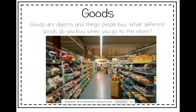Goods are objects and things people buy. What different goods do you buy when you go to the store? Think about a trip to the store. A lot of times kids want candy and cereal and chocolate milk. When I go to the store, I have to get things like bread and chicken to cook for dinner, vegetables, and fruits.